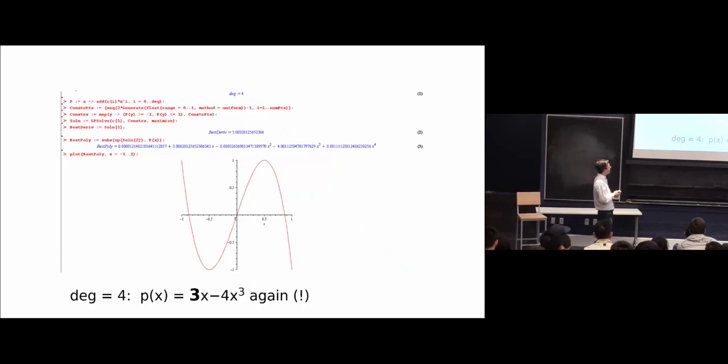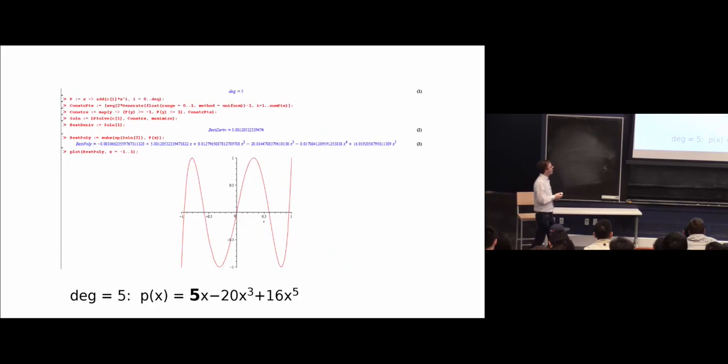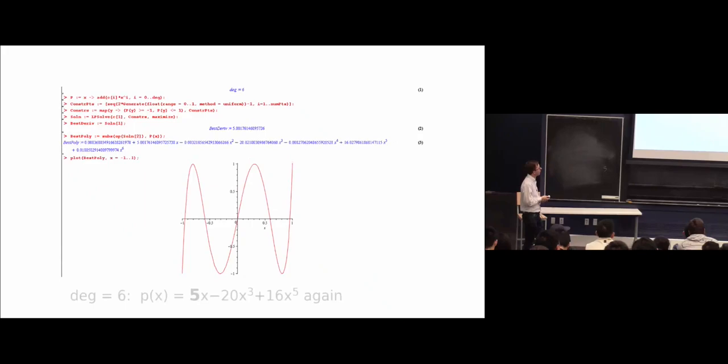Now if you do degree equals four, actually something interesting happens. The best thing seems to be the exact same polynomial. Three x minus four x cubed. Which is funny. You're like, oh, you were allowed to be degree four, and it was like, that's fine. I'm just going to be degree three anyway. It's possible. Okay. And so if you ask, what about degree equals five? Then actually it gets a bigger slope. It gets five. And this is the polynomial seemingly. Degree six, same polynomial again. Interesting.